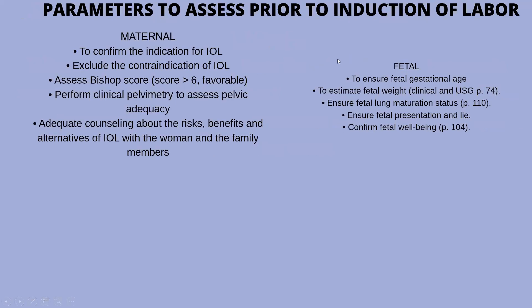Maternal parameters include: confirm the indication, exclude the contraindication, assess the Bishop's score — which should be above 6 (favourable) — perform clinical pelvimetry to assess pelvic adequacy, and provide adequate counselling about the risks, benefits, and alternatives of induction. Fetal parameters include: ensure fetal gestational age is term, estimate fetal weight clinically and by ultrasonogram, ensure fetal lung maturation status, ensure fetal presentation and lie, and confirm fetal well-being.